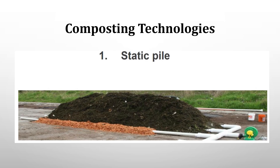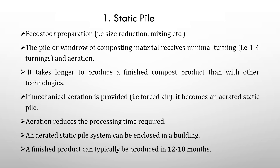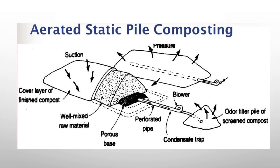The first composting technology is the static pile. It includes feedstock preparation — size reduction, mixing, etc. The pile or windrow of composting material receives minimal turning (1 to 4 turnings) and aeration, and takes longer to produce finished compost than other technologies. If mechanical aeration is provided, it becomes an aerated static pile, which reduces processing time. An aerated static pile system can be enclosed in a building. A finished product can typically be produced in 12 to 18 months.